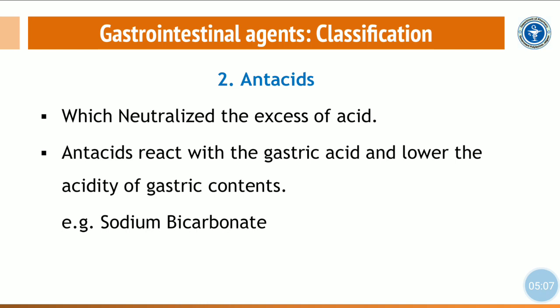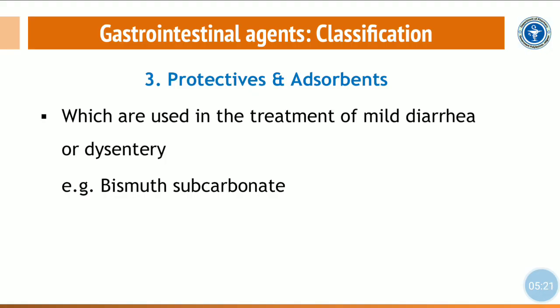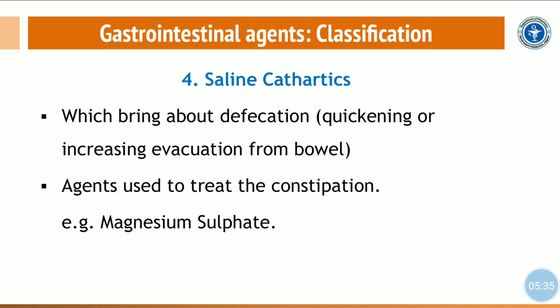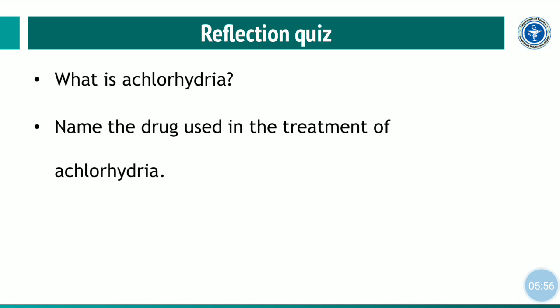The second class, antacids, are used to neutralize excess acid present in the stomach and lower the acidity of gastric contents; for example, sodium bicarbonate. The third class, protectives and adsorbents, are used in the treatment of mild diarrhea or dysentery; for example, bismuth subcarbonate and kaolin. The fourth class, saline cathartics, quicken or increase evacuation from the bowel to relieve constipation; for example, phenolphthalein, senna, and magnesium sulfate.